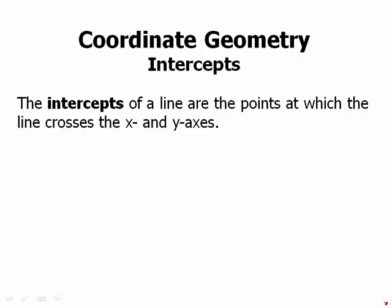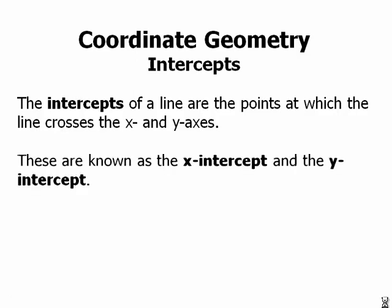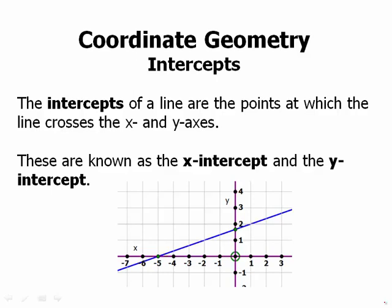Now we can talk about intercepts. The intercepts of a line are the points at which the line crosses the x and y axes. These are known specifically as the x-intercept and the y-intercept. For example, this point right here would be the x-intercept — the place where the line crosses the x-axis — and this would be the y-intercept, the place where the line crosses the y-axis.